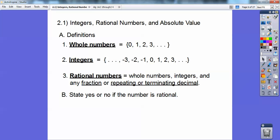So for example, state yes or no if the number is rational. Negative two-thirds, well that qualifies as a fraction. Negative two-thirds is a fraction, so yes, it's a rational number.